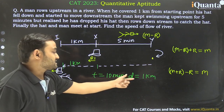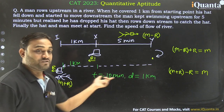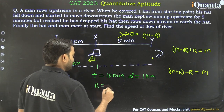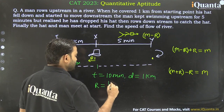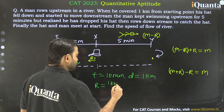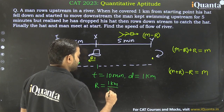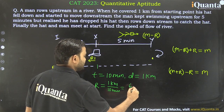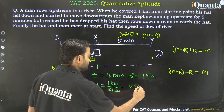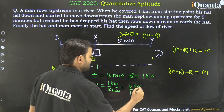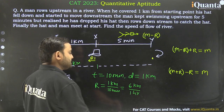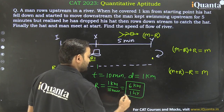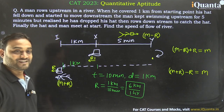The hat covered a distance of 1 km in total. We can find the speed of the river: speed of river equals 1 km per 10 minutes, which is 6 kilometers per hour. This is the speed of the river.